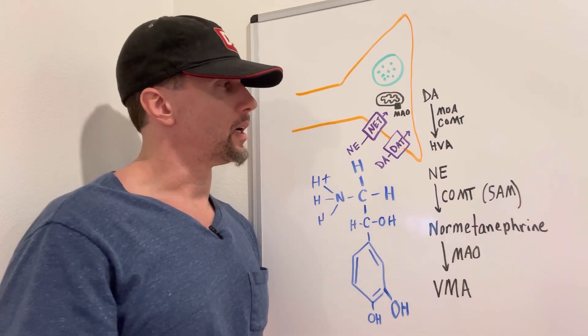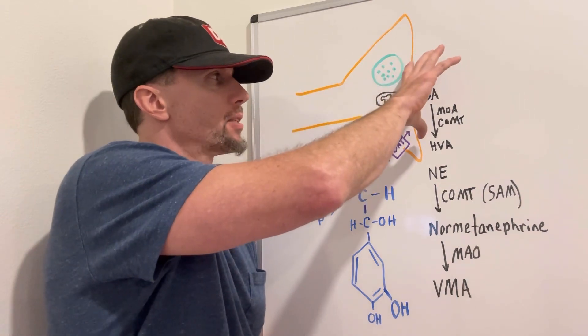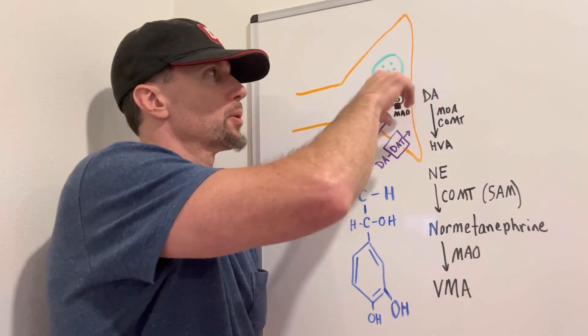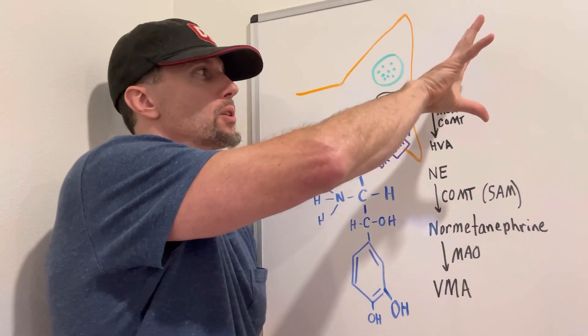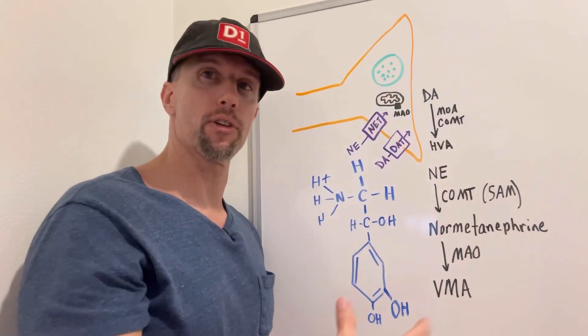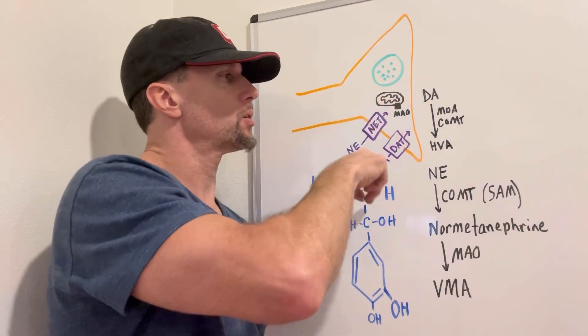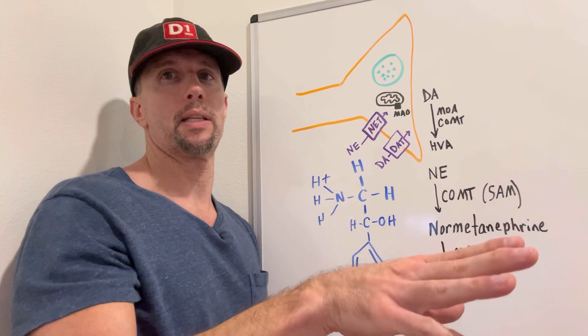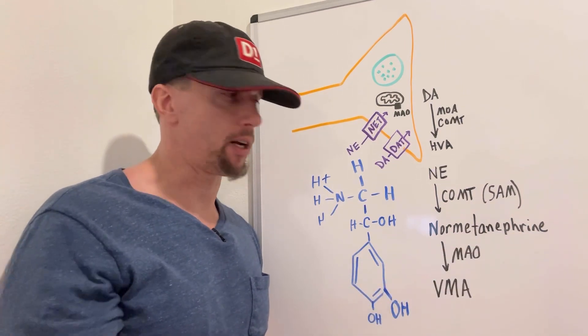So let's say that we have norepinephrine being released from this neuron. This is the axon terminal, so this norepinephrine would go through exocytosis and release into the synaptic cleft, and after a little bit, some of it will come back into the nerve terminal, and some of it will go in the bloodstream, maybe to the liver or the kidneys, and an enzyme would act on it.